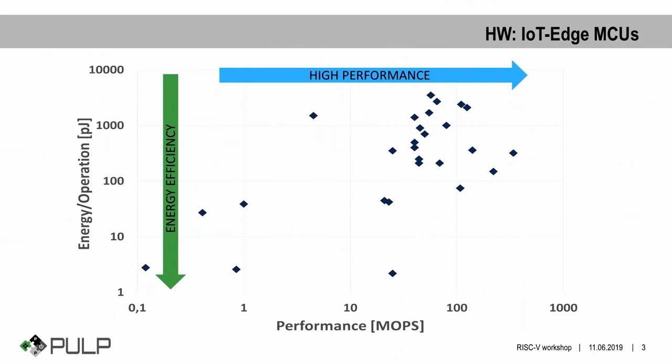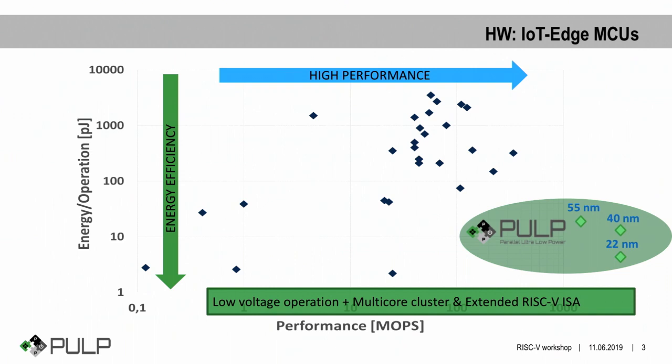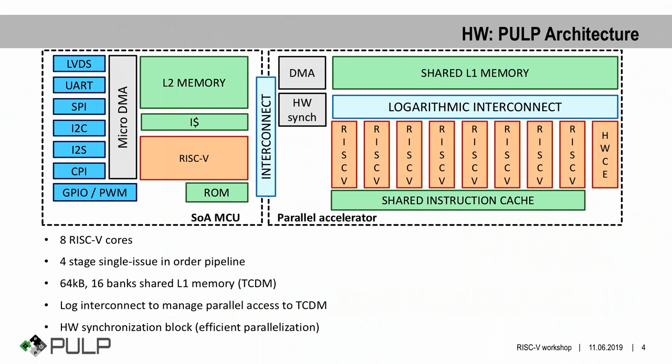Starting from the hardware, modern IoT architectures feature a specific extended RISC-V instruction set to make nodes capable of sustaining the deep learning workload at the edge. But usually microcontrollers trade off performance with energy efficiency. What we did with PULP instead is to reduce this trade-off, and this result is achieved by coupling low voltage operations with a multi-core cluster accelerator featuring an extended RISC-V instruction set.